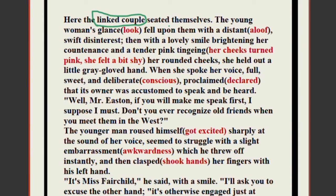The young woman's glance fell upon them with a distant, swift disinterest. She was an elegant lady from a luxurious family and did not want to look at them — just one quick glance. Then, with a lovely smile brightening her countenance and a tender pink tingeing her rounded cheeks, she recollected that one of the two was her long-lost friend. The pink tinge means she felt shy — when you feel shy, your cheeks take a pinkish glow. This suggests she may have had a romantic feeling for this person.